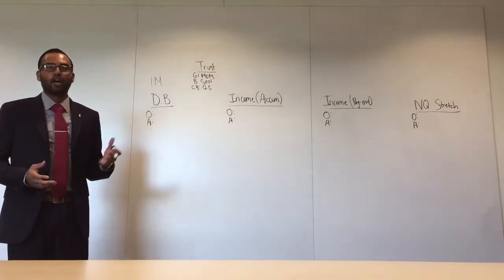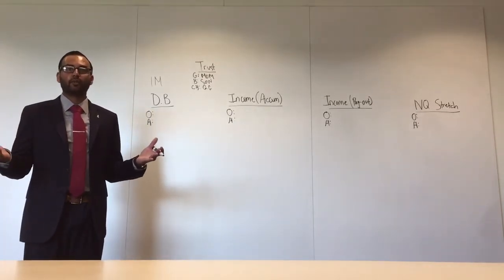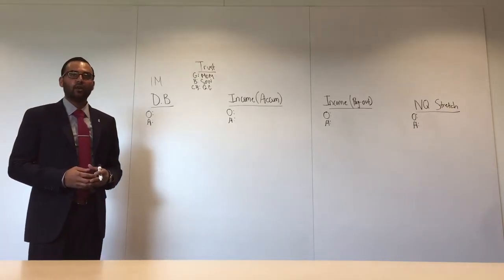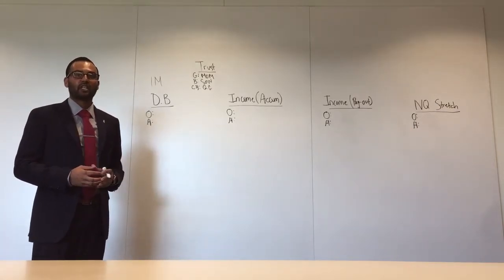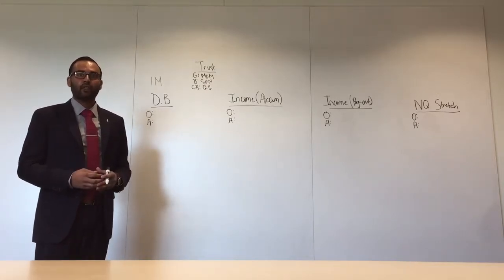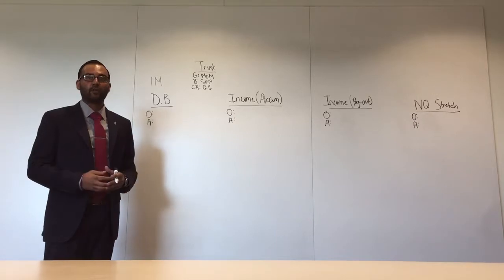Two options you may want to consider are municipal bonds and a deferred variable annuity. Municipal bonds will offer you that principal protection. What you're sacrificing is the growth potential, and you run the risk of a rising interest rate environment that we currently are in today. The second option is a deferred variable annuity.